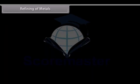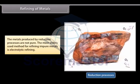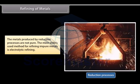Refining of metals. The metals produced by reduction processes are not pure. They still contain impurities which must be removed to obtain pure metals. The most widely used method for refining impure metals is electrolytic refining. Many metals are refined electrolytically.